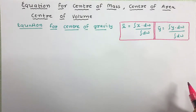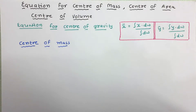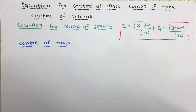Now let us move to today's topic — the equation of center of mass. In the previous lecture we derived the equation for center of gravity. Now, instead of the weight of the object, if the mass of the object is considered, the procedure of finding the center of mass — the point where the whole mass is concentrated — remains the same.